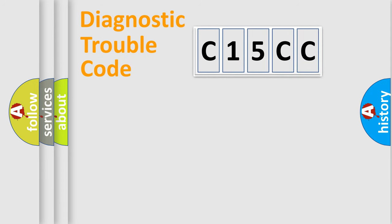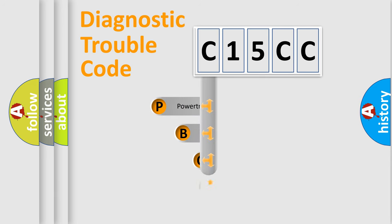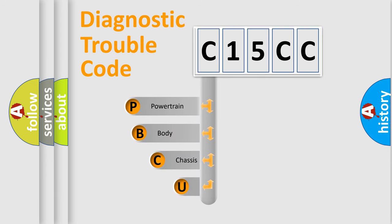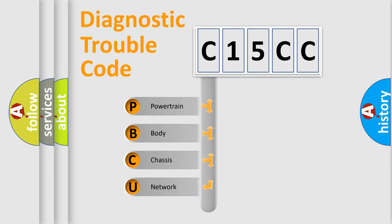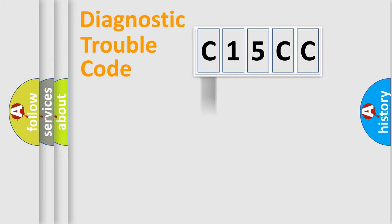Let's do this. First, let's look at the history of diagnostic fault code composition according to the OBD2 protocol, which is unified for all automakers since 2000. We divide the electric system of the automobile into four basic units: Powertrain, Body, Chassis, and Network.